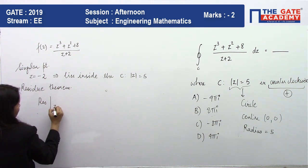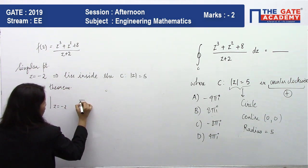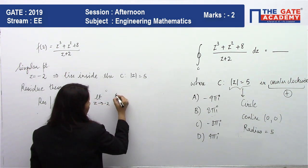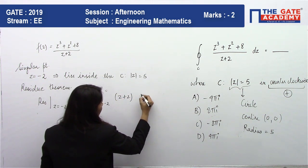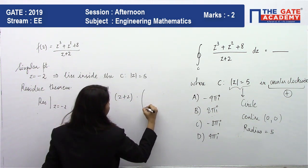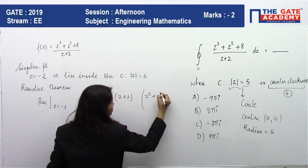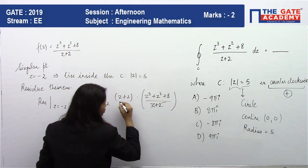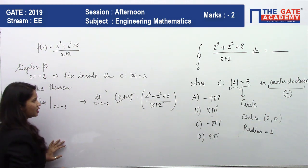That's why I am finding what is the residue at z = -2. So this is given by limit z tends to -2, (z+2) into f(z). f(z) is (z³ + z² + 8)/(z+2). So here z+2 and z+2 will get cancelled.